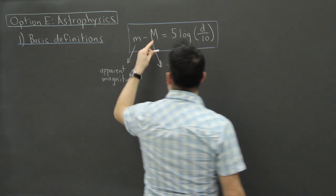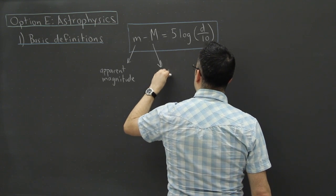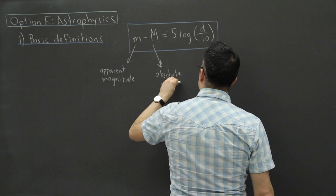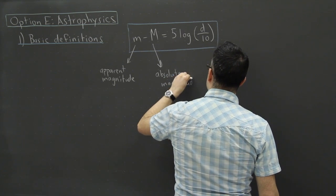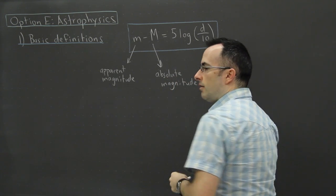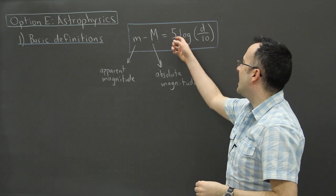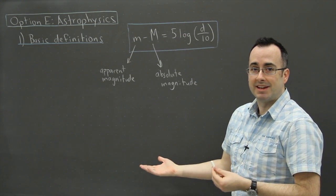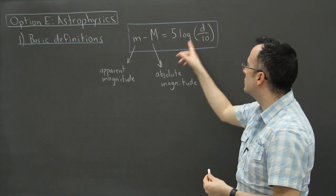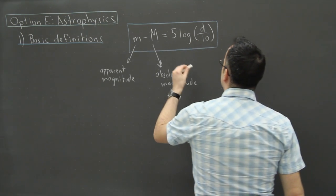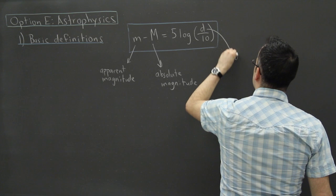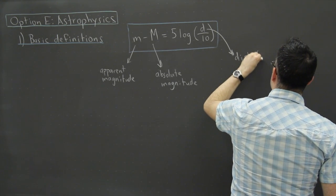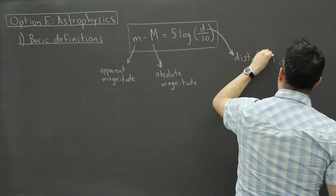Capital M is the absolute magnitude, and that also has no units. Now on your data booklet, it's actually written with an LG here, and actually it's just a log. Some people get a little bit confused when they see that. And this d, that's the distance to the star, but it's measured in parsec.